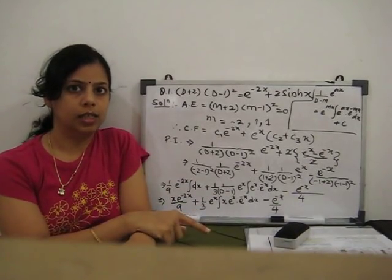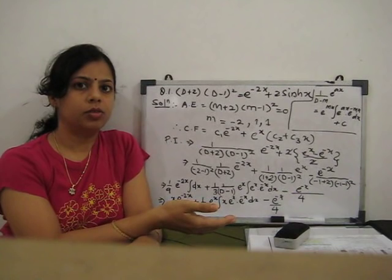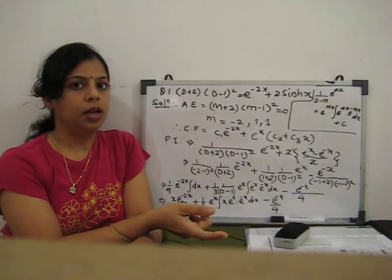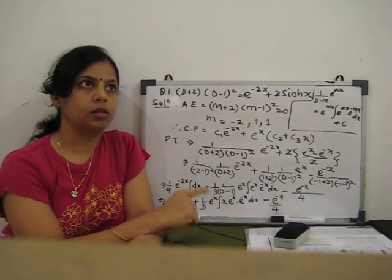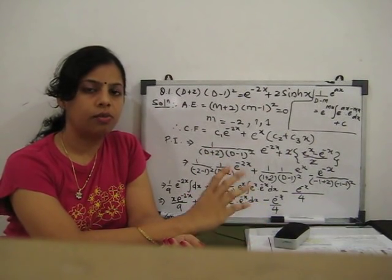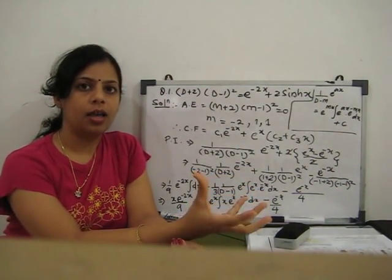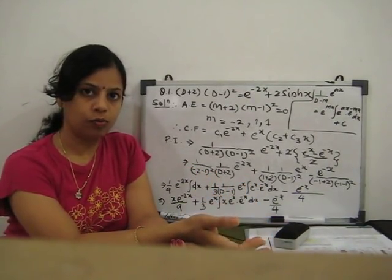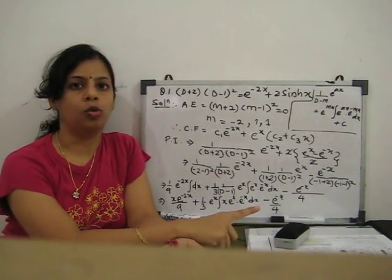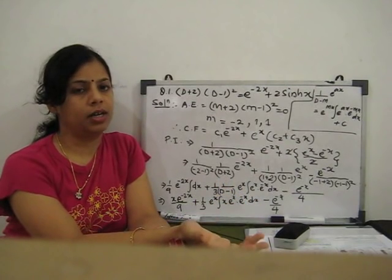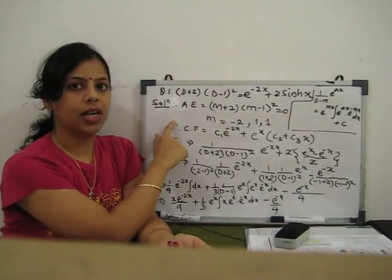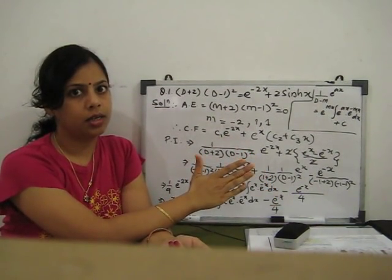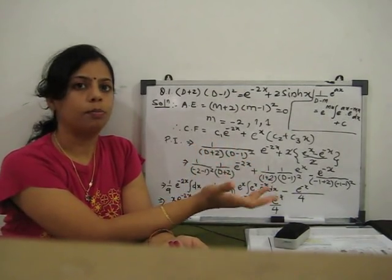Hello and welcome to our next video. In my previous video you saw how to solve the linear differential equation with constant coefficients, where the complete solution is y equals cf plus pi — complementary function plus particular integral. We discussed how to find the complementary function and how to find the particular integral for different cases. Now there is one example to solve so you can better understand how to apply the complementary function and PI.